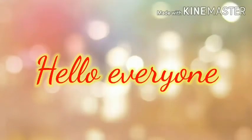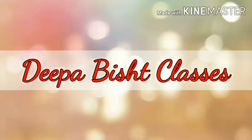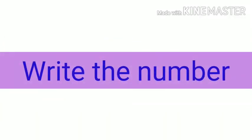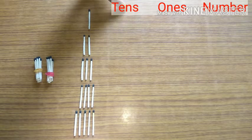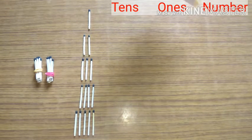Hello everyone. Let's start our next chapter — Chapter number 8: Numbers from 21 to 50. This chapter is a continuation of Chapter number 5, so we will learn the same thing we learned in Chapter 5 but with different numbers. This is the tens place, this is the ones place, and this is the number which we will get.